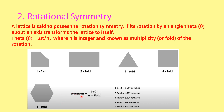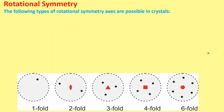The angle of rotation for 1-fold is 360 degrees, for 2-fold it is 180 degrees, for 3-fold it is 120 degrees, for 4-fold it is 90 degrees, and for 6-fold it is 60 degrees. These are the types of rotation symmetry axes possible in crystals.